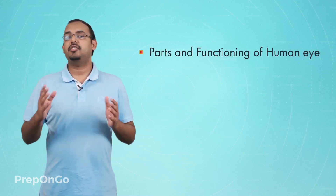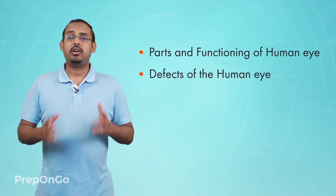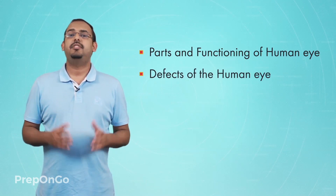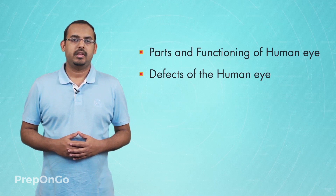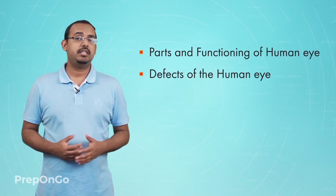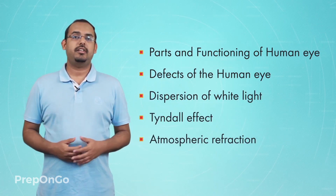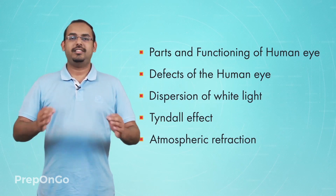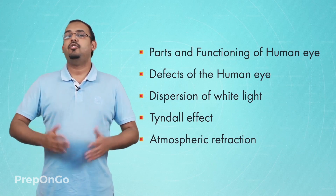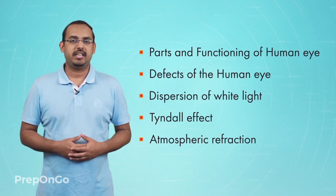Throughout this chapter, we have studied multiple concepts related to the parts of the human eye and its functioning. We have also learnt about the various defects that occur to a normal human eye and how we cure these defects. In the later half of the chapter, we studied some interesting phenomena that light exhibits, like the dispersion of light, the Tyndall effect, and atmospheric refraction. Now you can practice all these concepts by doing the quiz at the end of the chapter. All the best.